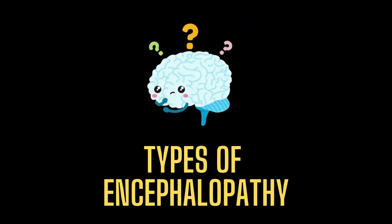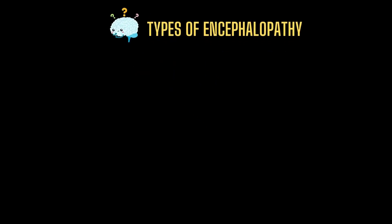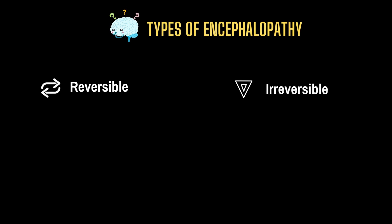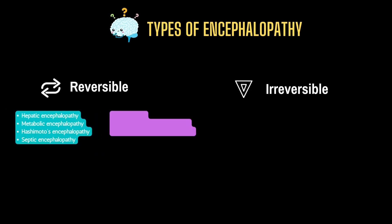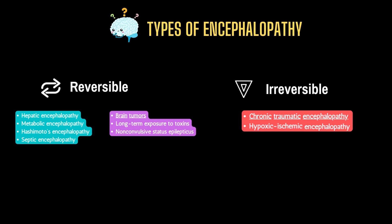Now, let's have a look at types of encephalopathy. There are mainly two types: reversible and irreversible. Reversible includes hepatic encephalopathy, metabolic encephalopathy, Hashimoto's encephalopathy, and septic encephalopathy. There are also certain factors that can lead to reversible encephalopathy, including brain tumors, long-term exposure to toxins, and non-convulsive status epilepticus. Irreversible includes chronic traumatic encephalopathy and hypoxic ischemic encephalopathy.